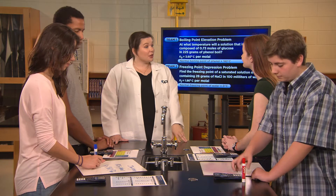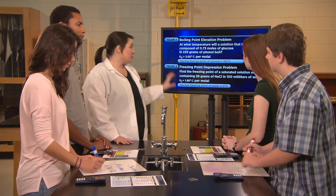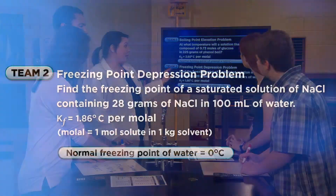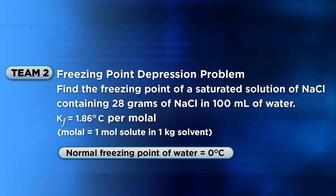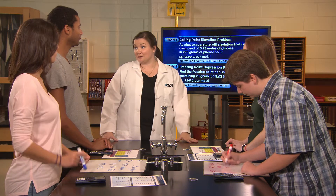Team 2, I want you to work on a freezing point depression calculation. In your problem, you're going to find the freezing point of a saturated solution of sodium chloride, where you've got 28 grams of sodium chloride and 100 grams of water. The freezing constant, or Kf, is 1.86 degrees Celsius per molal, and the normal freezing point of water is 0 degrees Celsius. Once you've finished your work on your whiteboards, we'll discuss it.